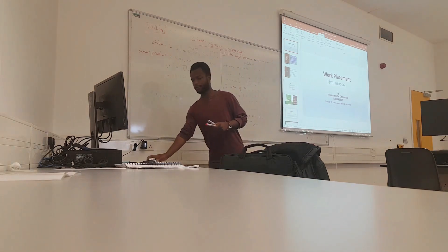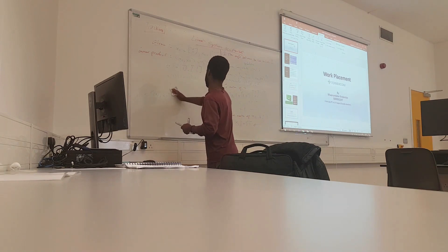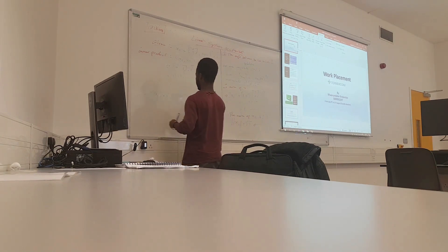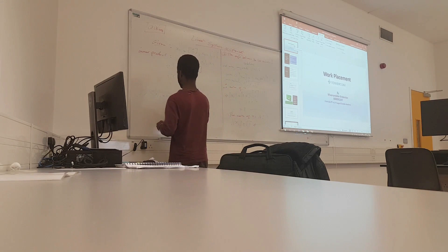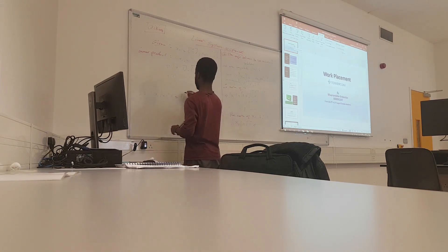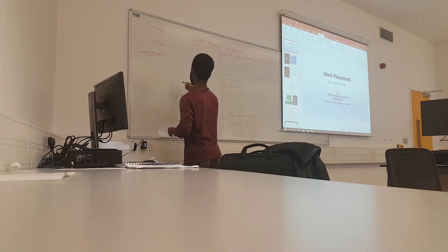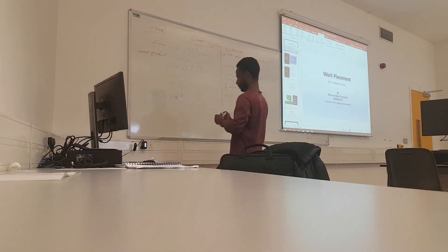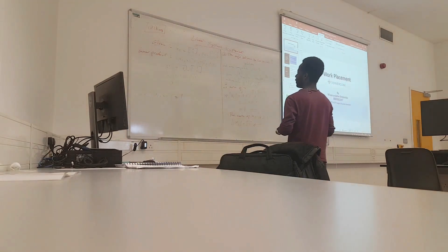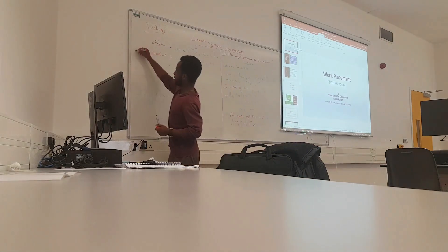I'm not sure if you are able to see that — the markers are finished, so I have to write in red. The inner product of x1 and x2 equals 1. That is what we got. This is part 1.